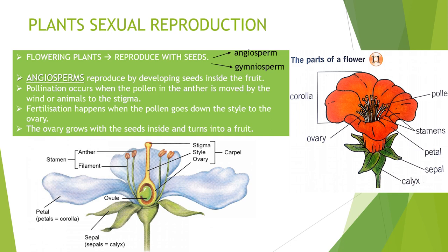One type is angiosperms and the other is gymnosperms. Angiosperms are the ones shown here in these two pictures with all their parts. Angiosperms develop seeds inside fruit. Pollination occurs when the pollen moves to the style — it can be moved by wind or animals — and it goes into the stigma. Fertilization happens when this pollen goes down the style to the ovary, where the seeds grow inside and turn into a fruit. When the fruit falls to the ground, another plant can grow from the seeds.